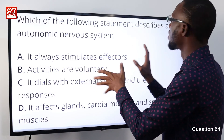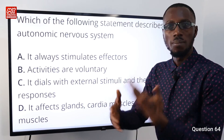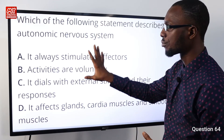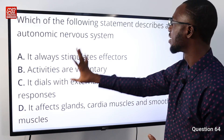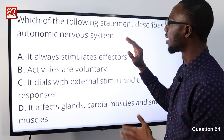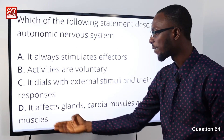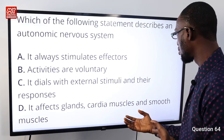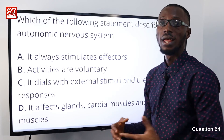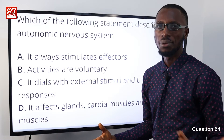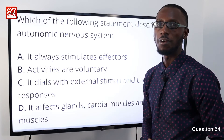Question number 64: Which of the following statements describes an autonomic nervous system? This is like an automatic response. Going through all the options, option D actually describes the autonomic nervous system: it affects glands, cardiac muscles, and smooth muscles. This talks about involuntary actions like breathing and sleeping. Option D is very correct.